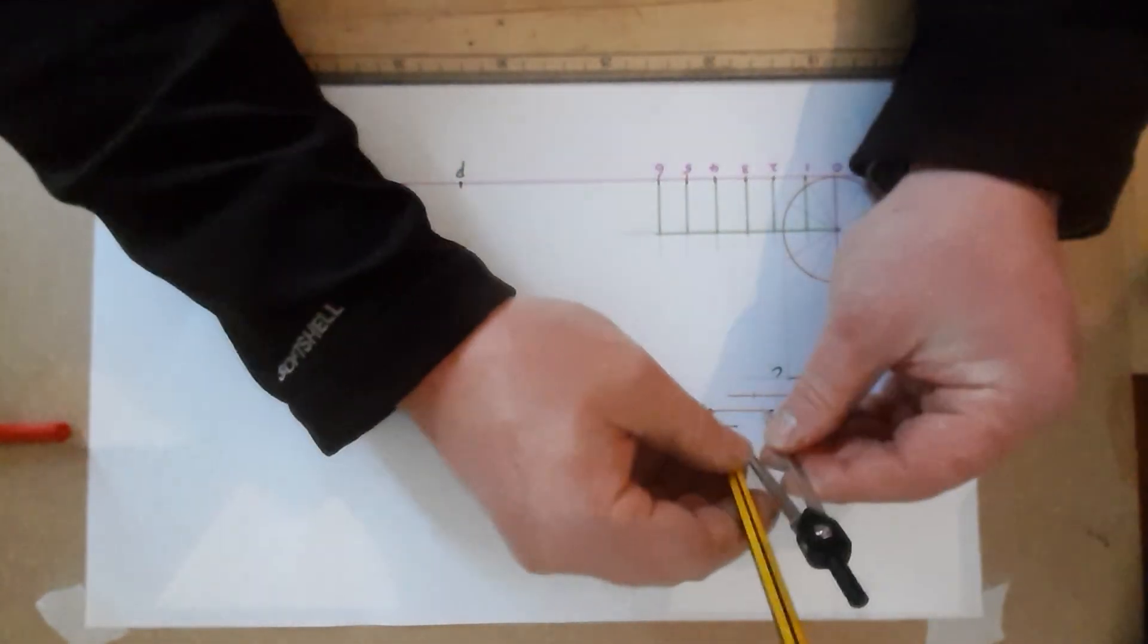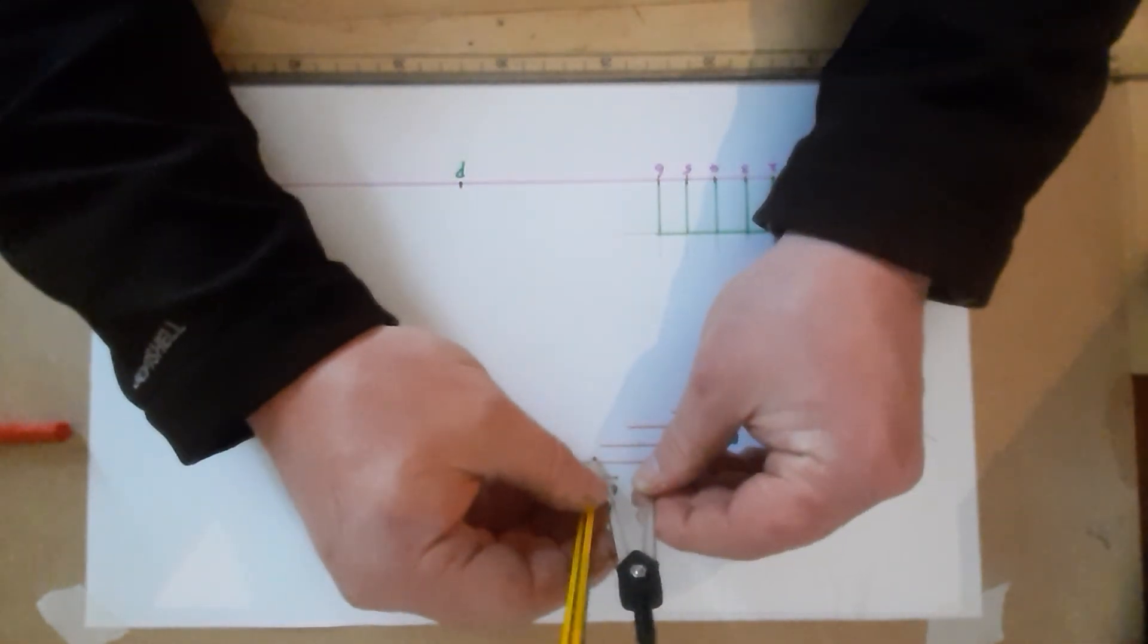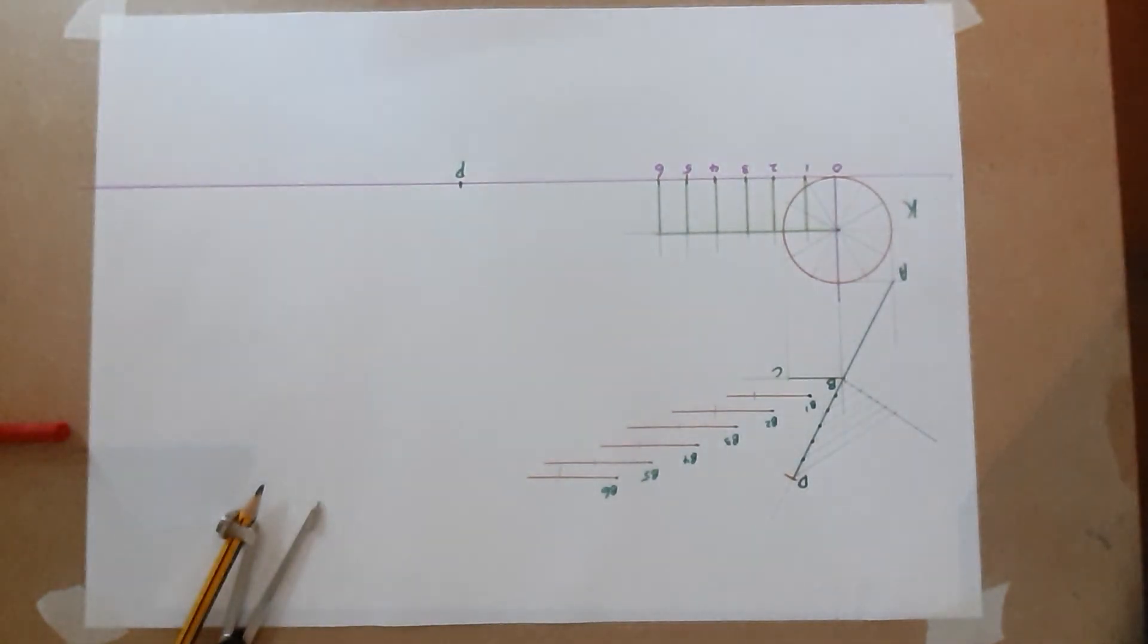I get my compass, I'm going to set it to CB, and I'm going to mark that then from B1, B2, B3, B4, B5, and B6. Now...